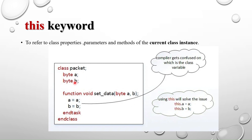In this example, I have two properties, 'a' and 'b', and a function called 'set_data'. I'm passing 'a' and 'b' and assigning those arguments to properties 'a' and 'b'. Here the compiler gets confused about which is the class variable. If you run this code you will not get an error, but you will not get the desired output. To avoid this ambiguity, we use the 'this' keyword.